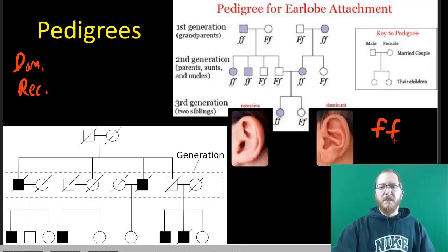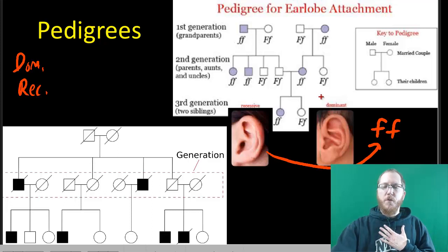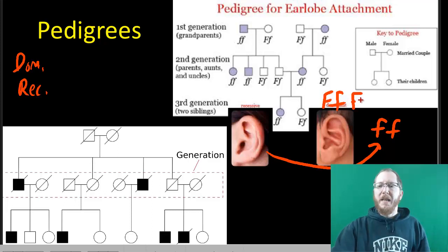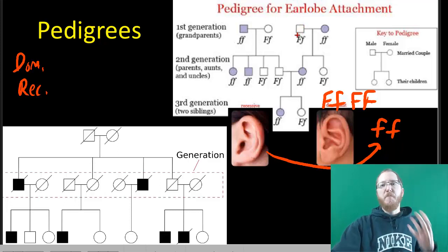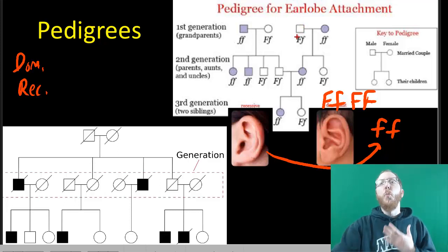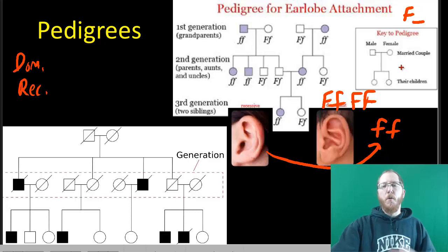If you have the dominant trait — free earlobes — that could be either Ff or FF. There are two possibilities, so you can't just look and say someone must be FF by default. All you know is they have at least one dominant allele. Sometimes people write that as a capital F followed by a line to show something else is there but we're not sure. The fun thing about a pedigree is that once you've looked at it, you can often deduce the genotype.